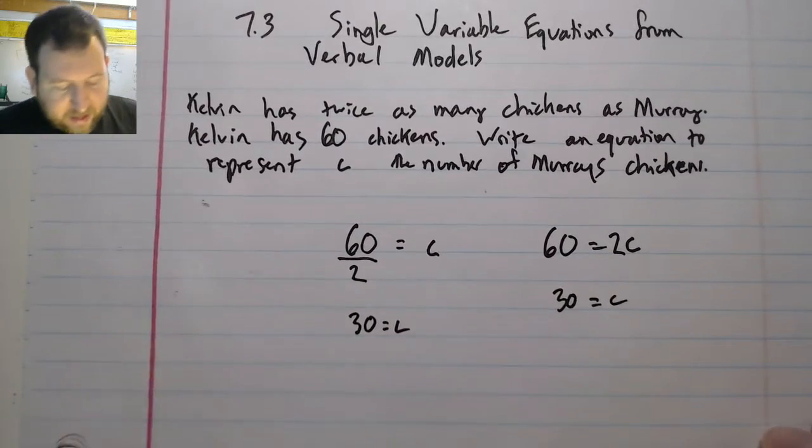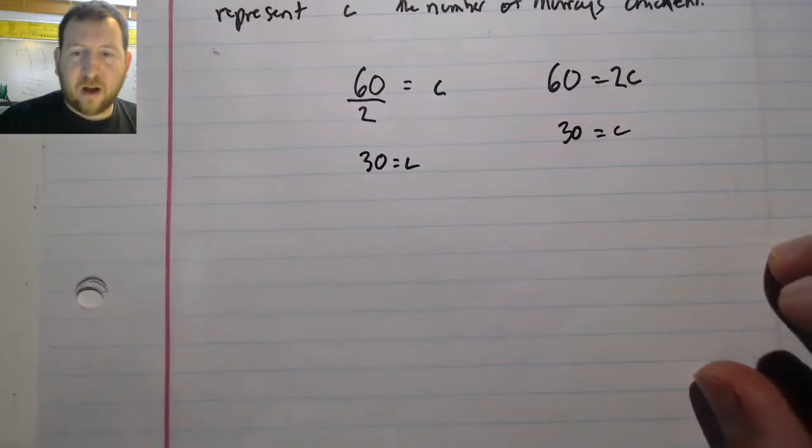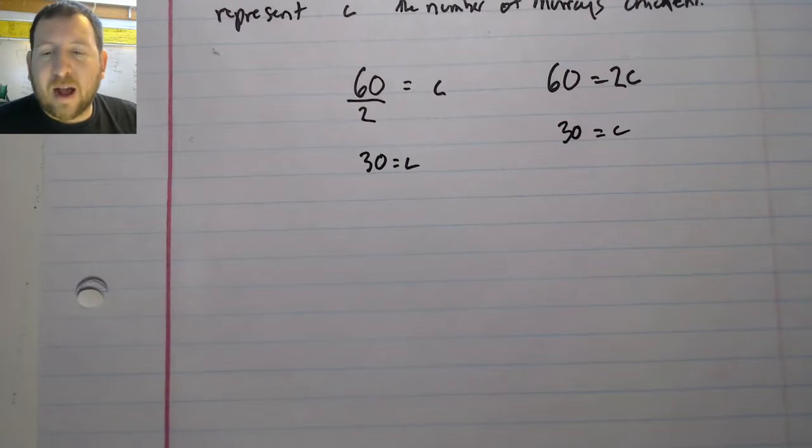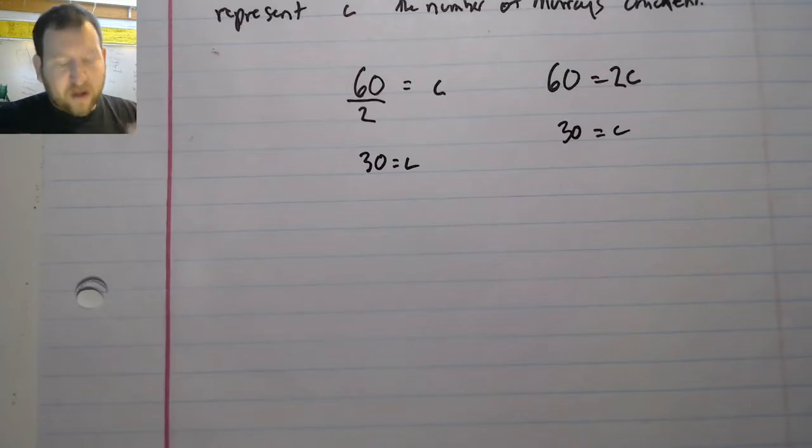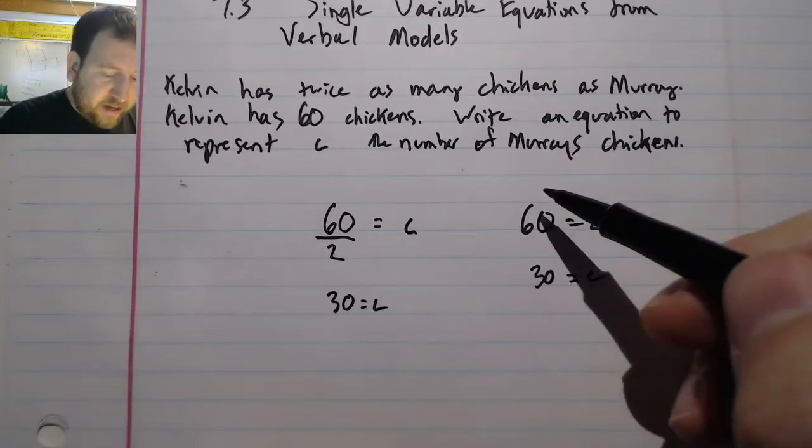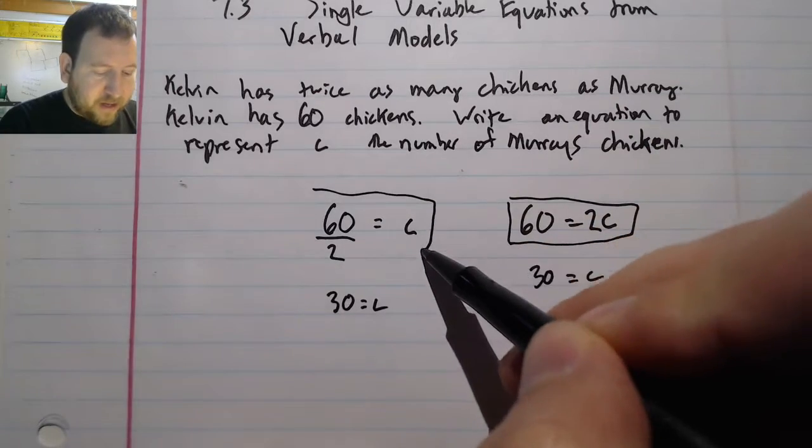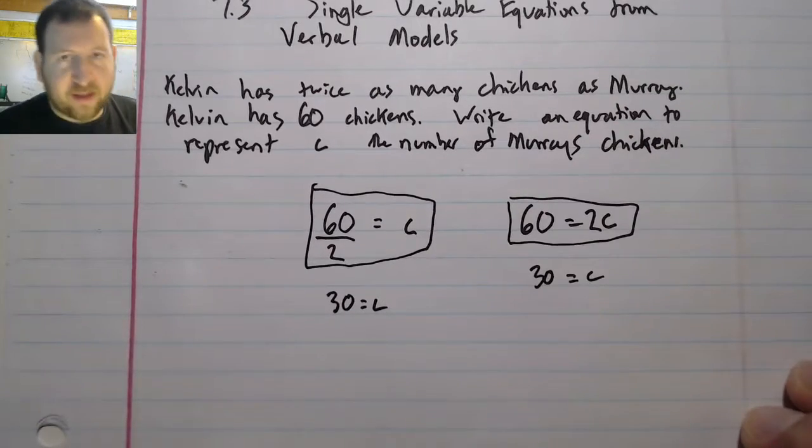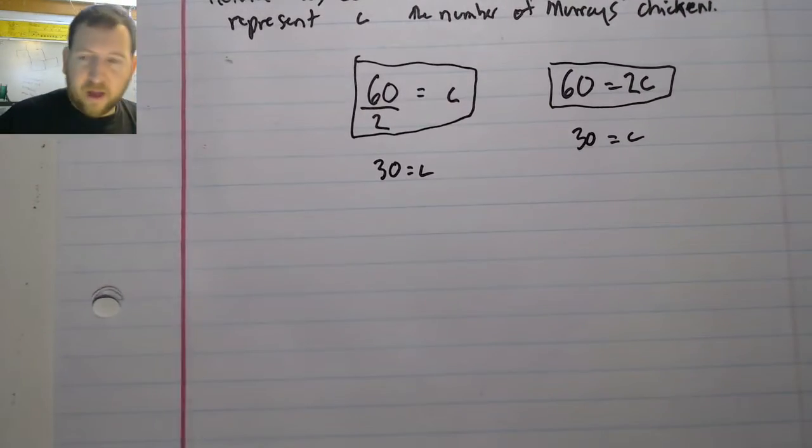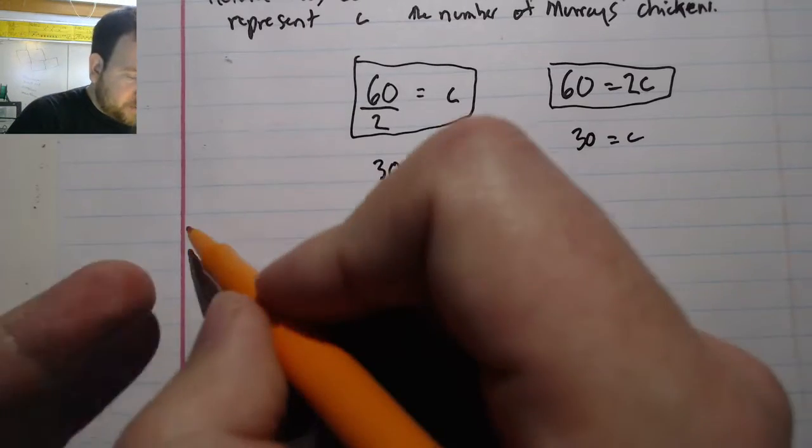But the key and the trick for these is often figuring out how to write them. Because I don't want to know the answer so much. For these, this is actually the answer we're looking for. I'm looking for the equation with the variable inside of it. Let's look at a couple of examples.